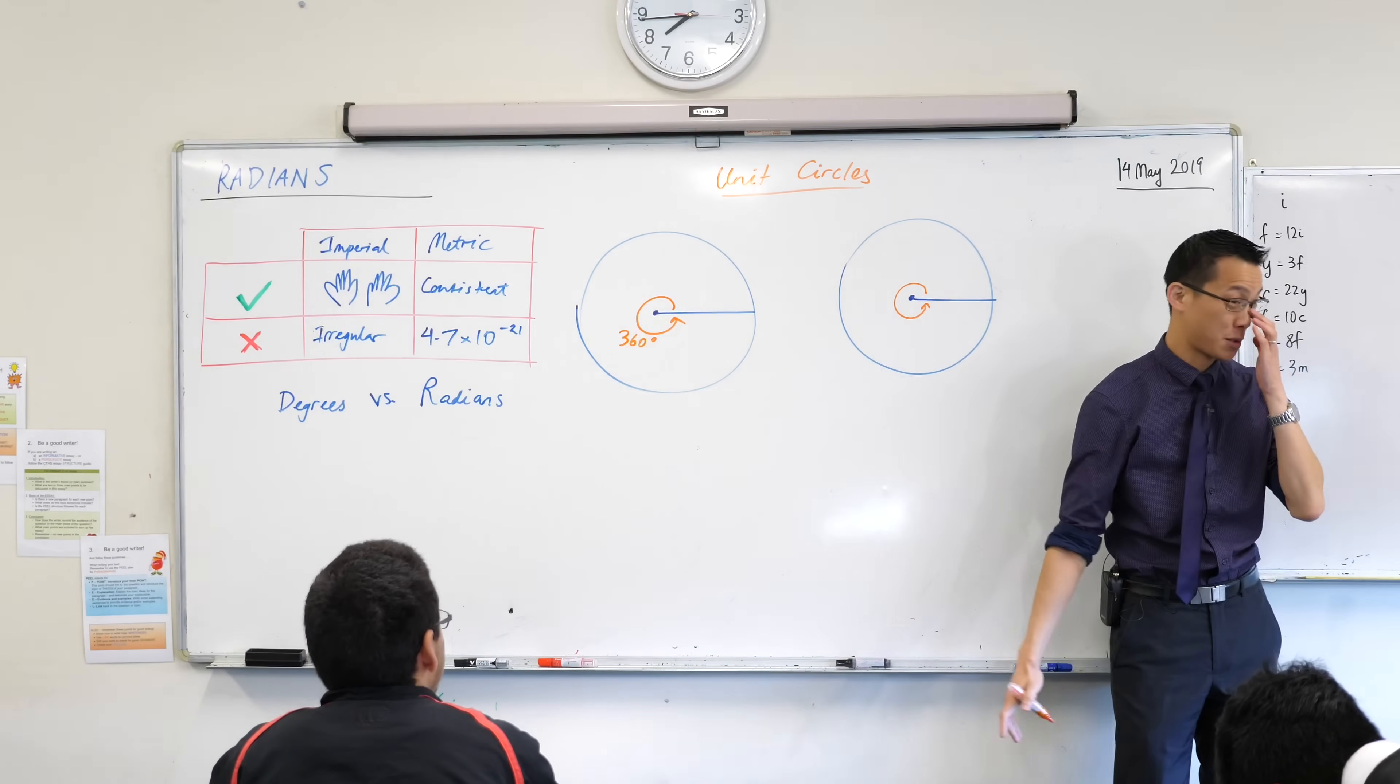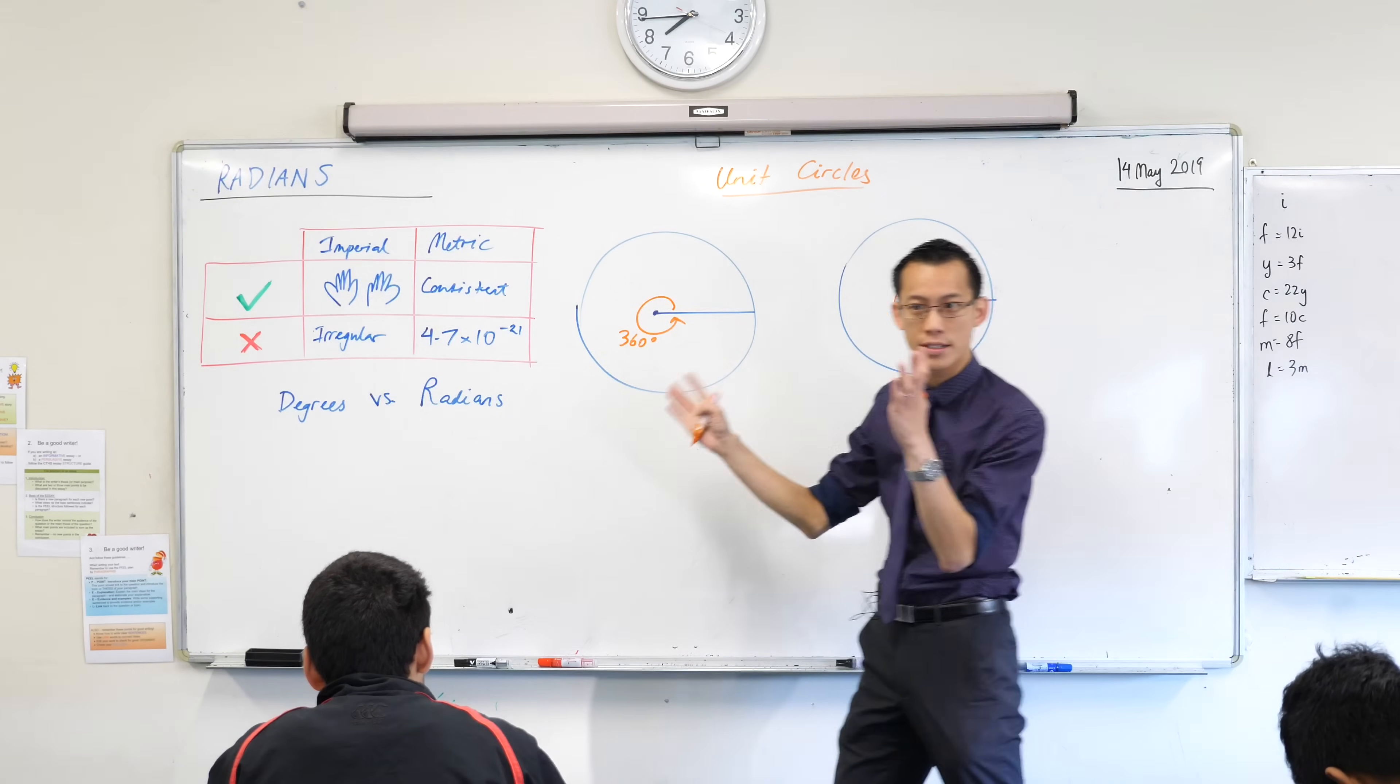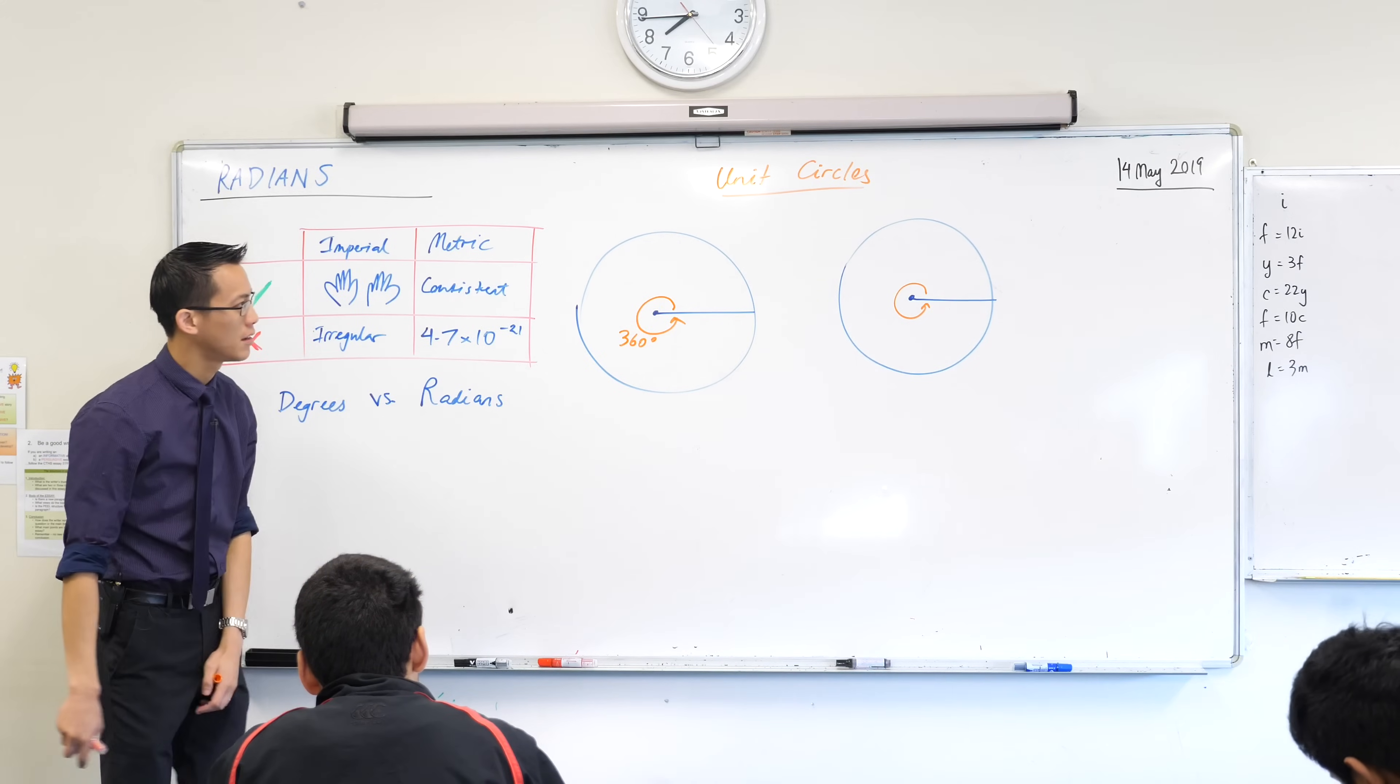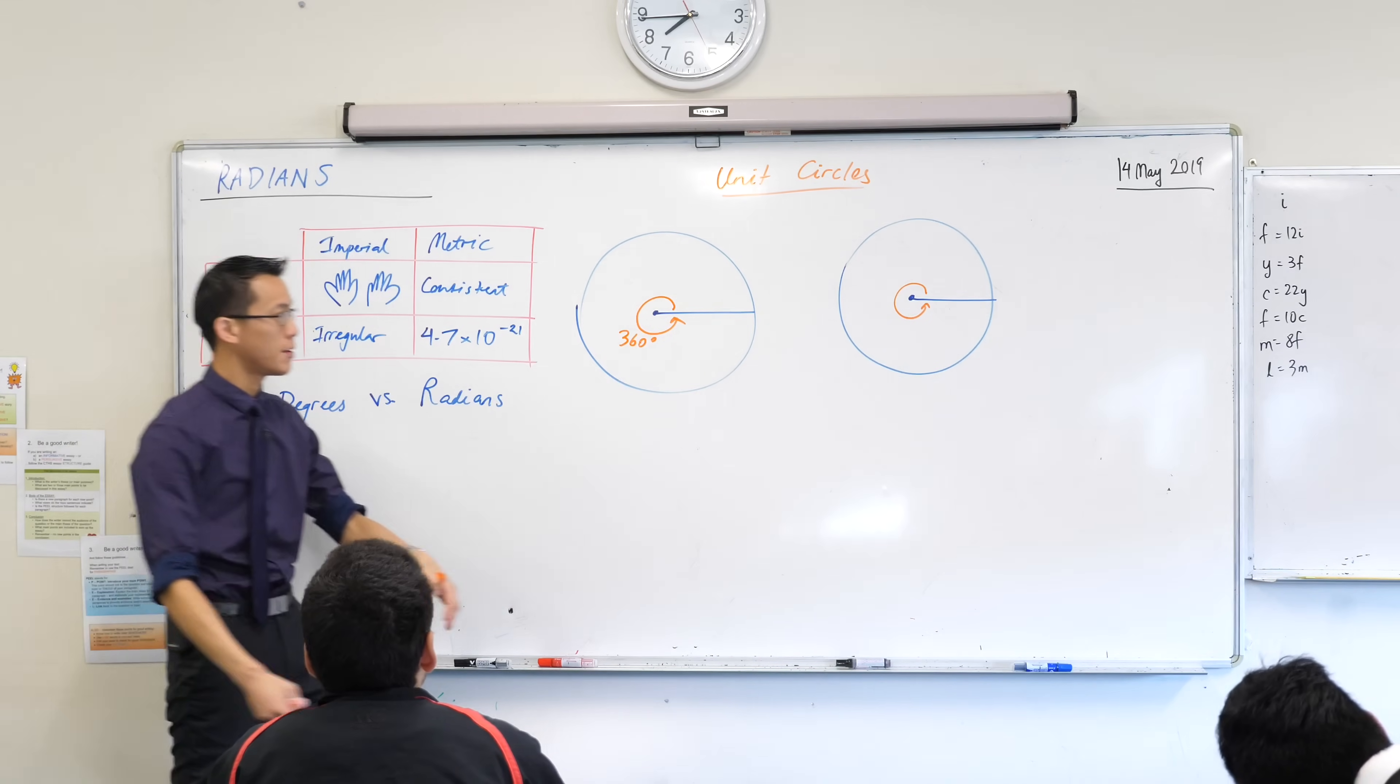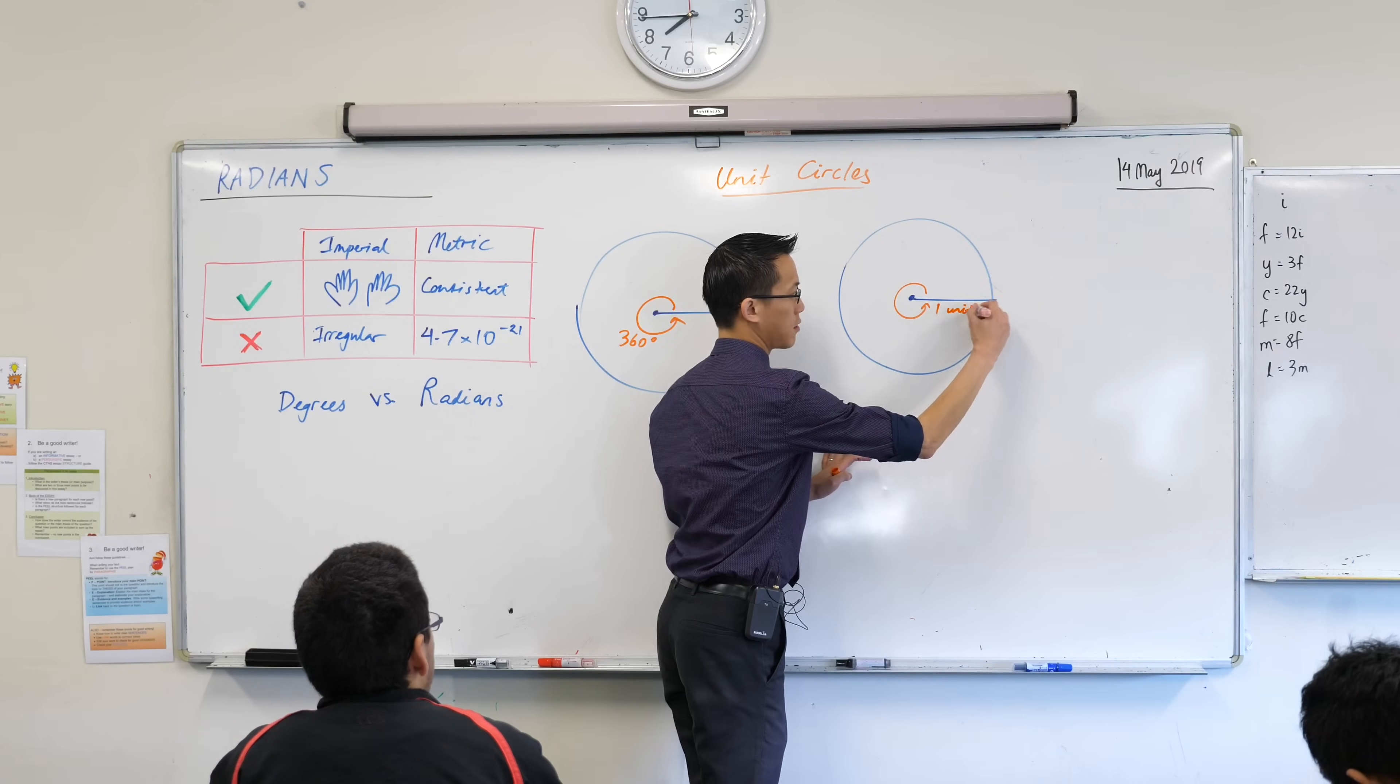If all of these are unit circles, the unit refers to like one unit. What does that mean on this particular circle? What is one unit on here? The radius. Thank you very much. On a unit circle, the radius is one unit, right?